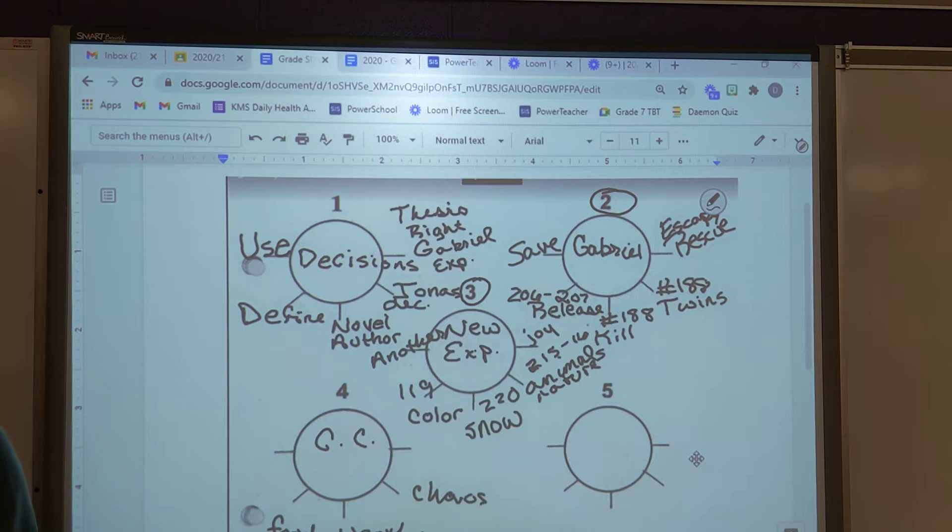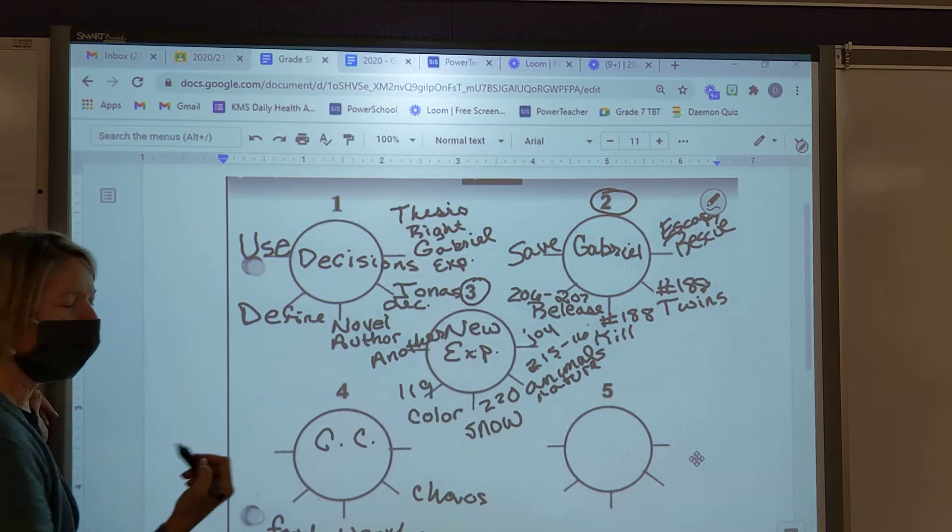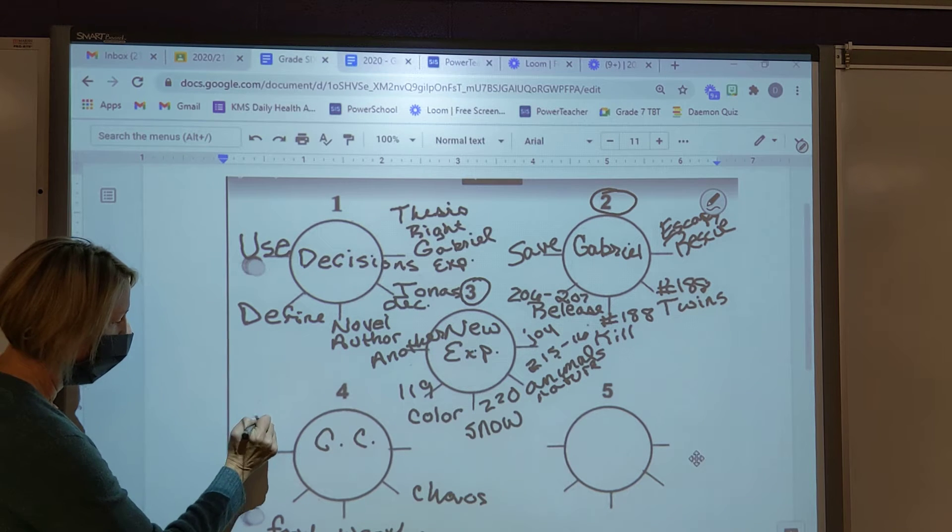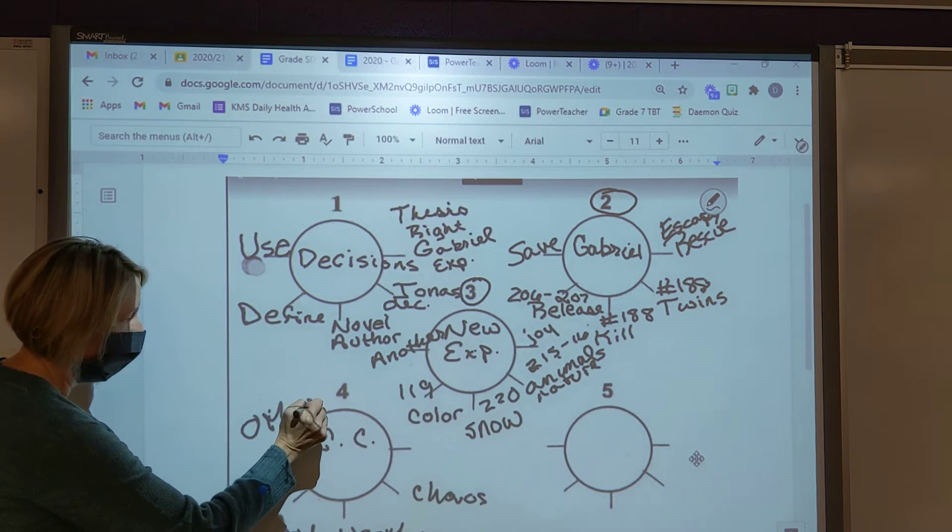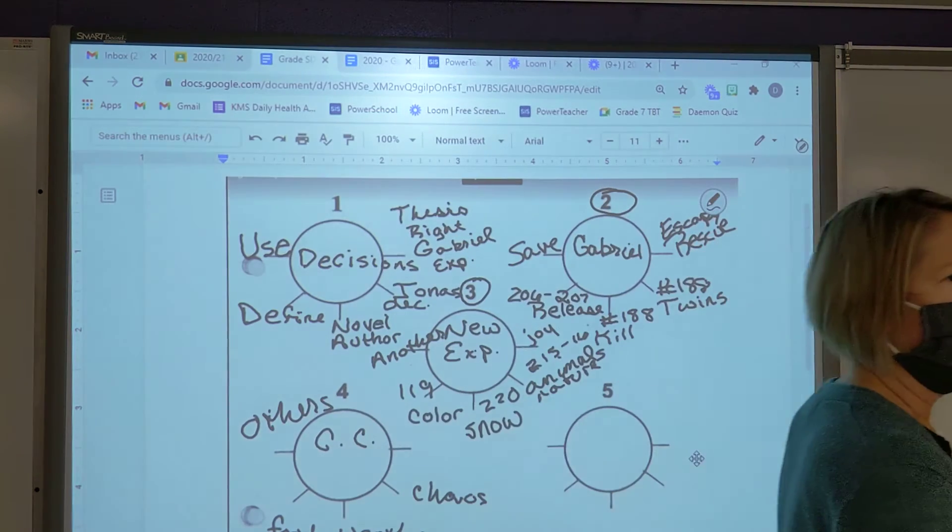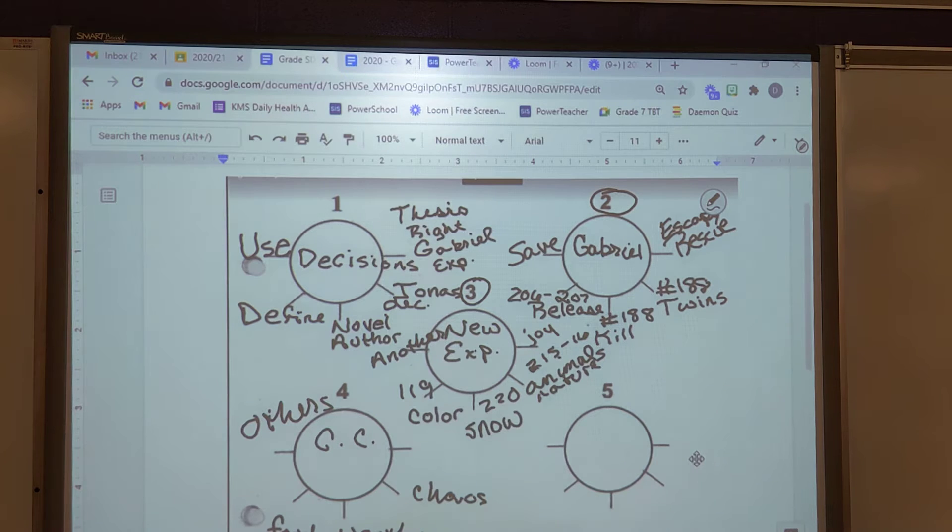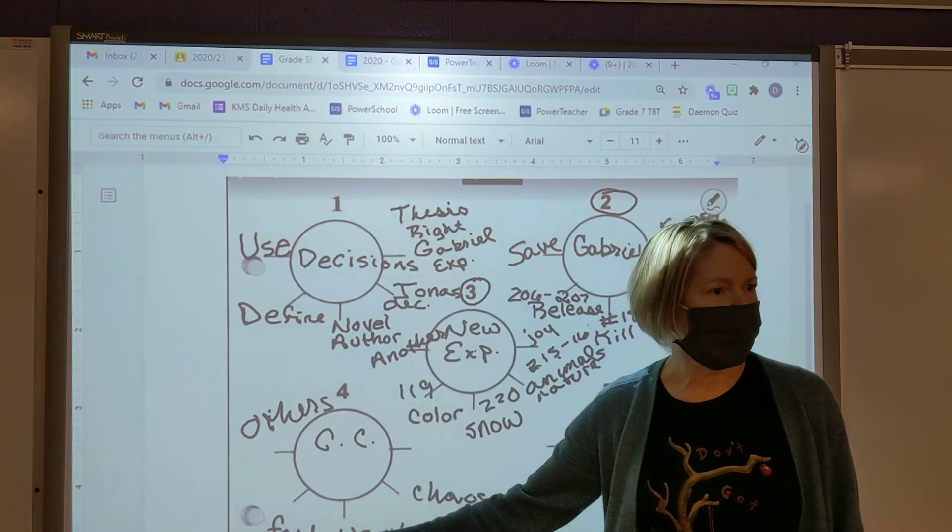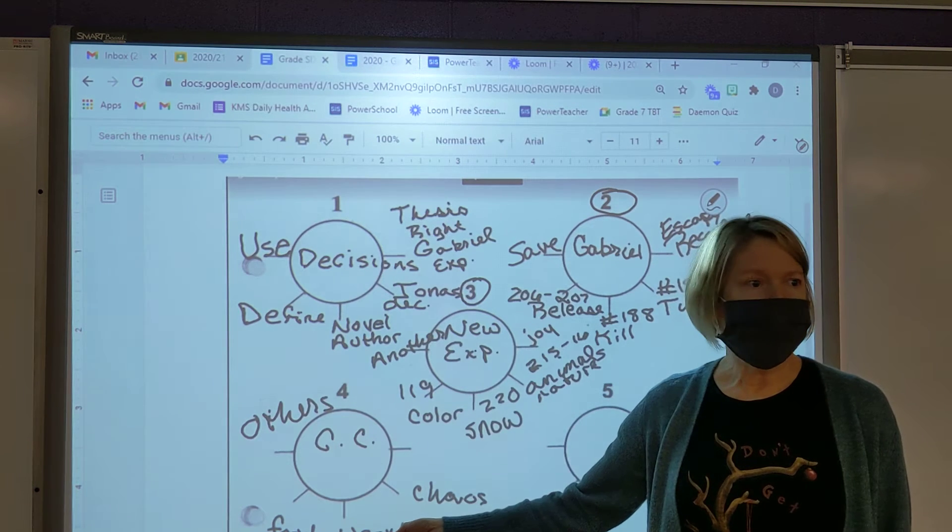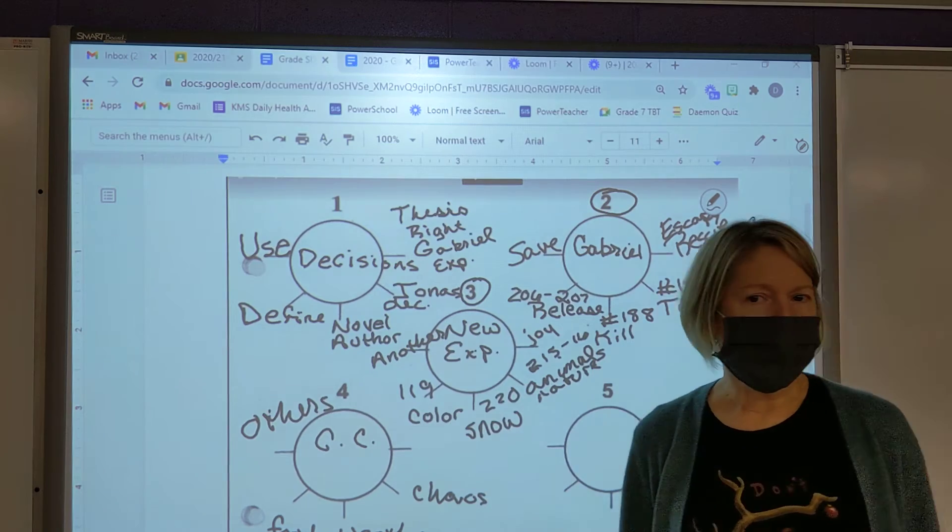So counterclaim, for me I always start with something like the word 'others' because when I go to write this I'm going to say something like other readers might think that Jonas should have stayed in the community, right? Why? Well because he wouldn't have been hungry, would have had enough food. The weather would have been predictable and the same and there wouldn't have been any chaos.